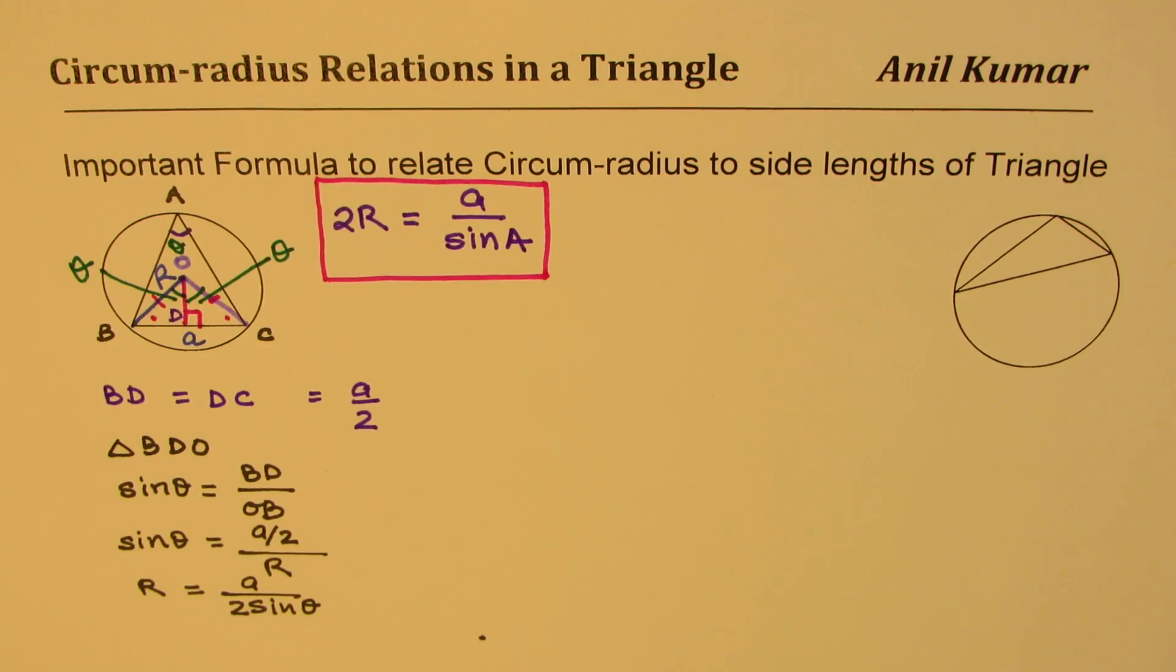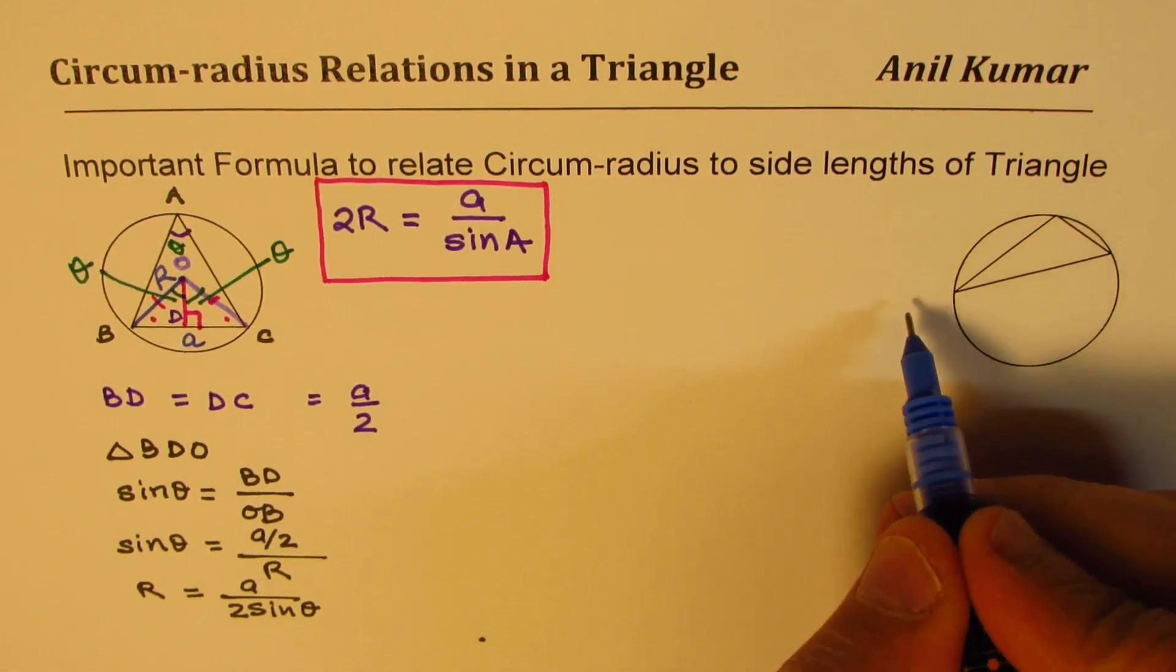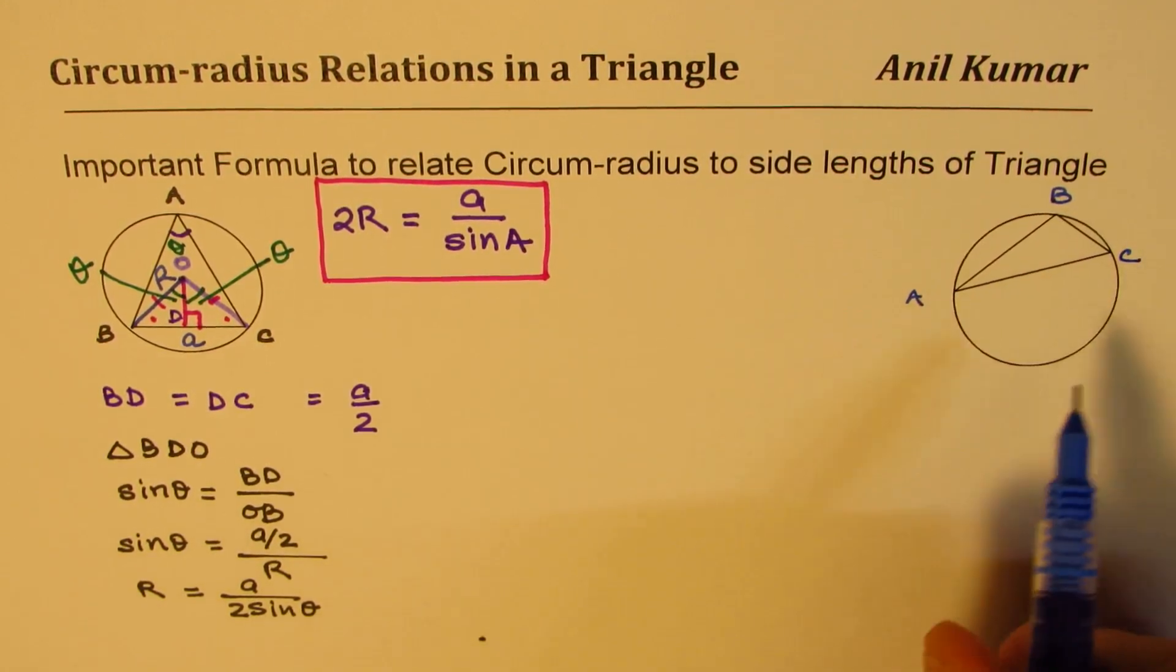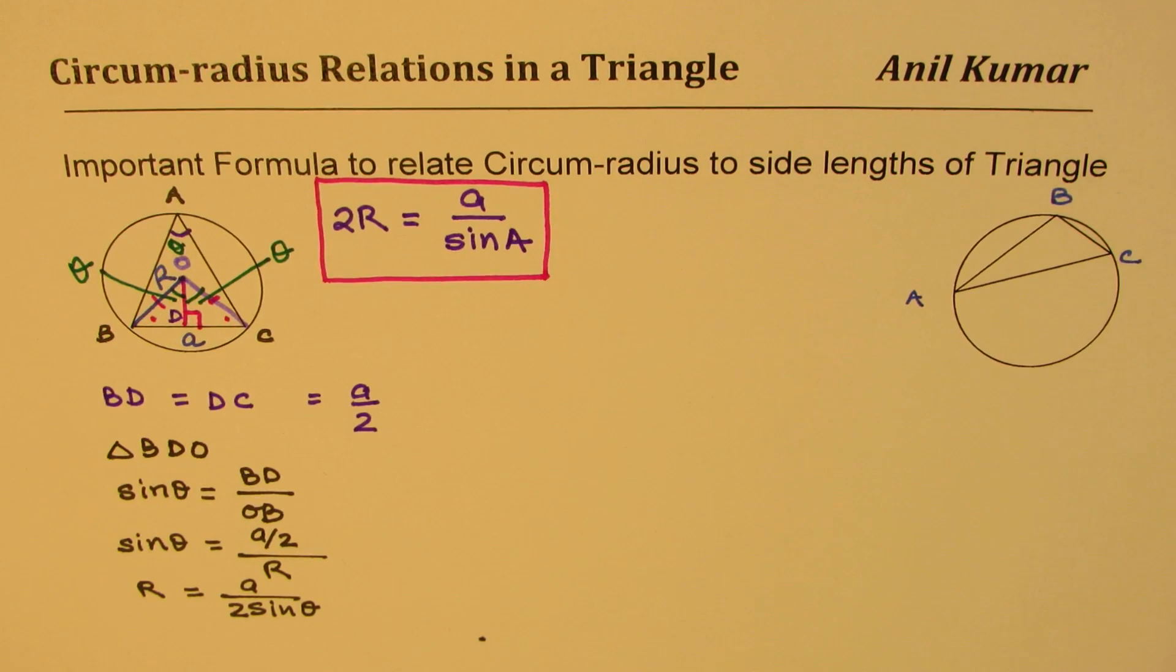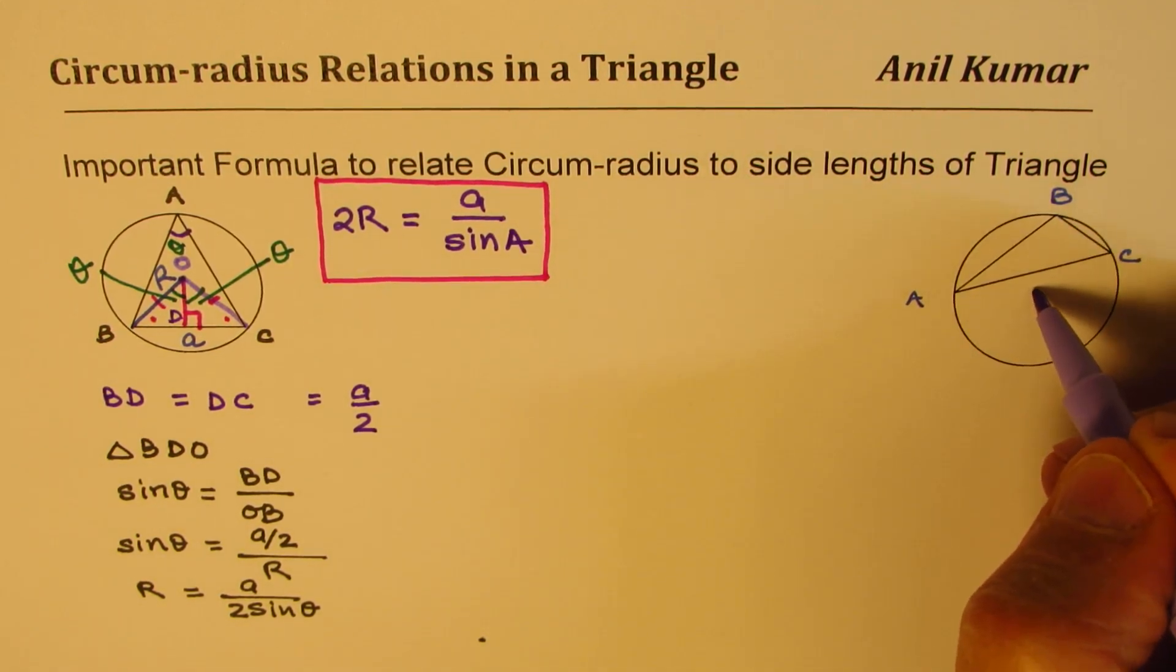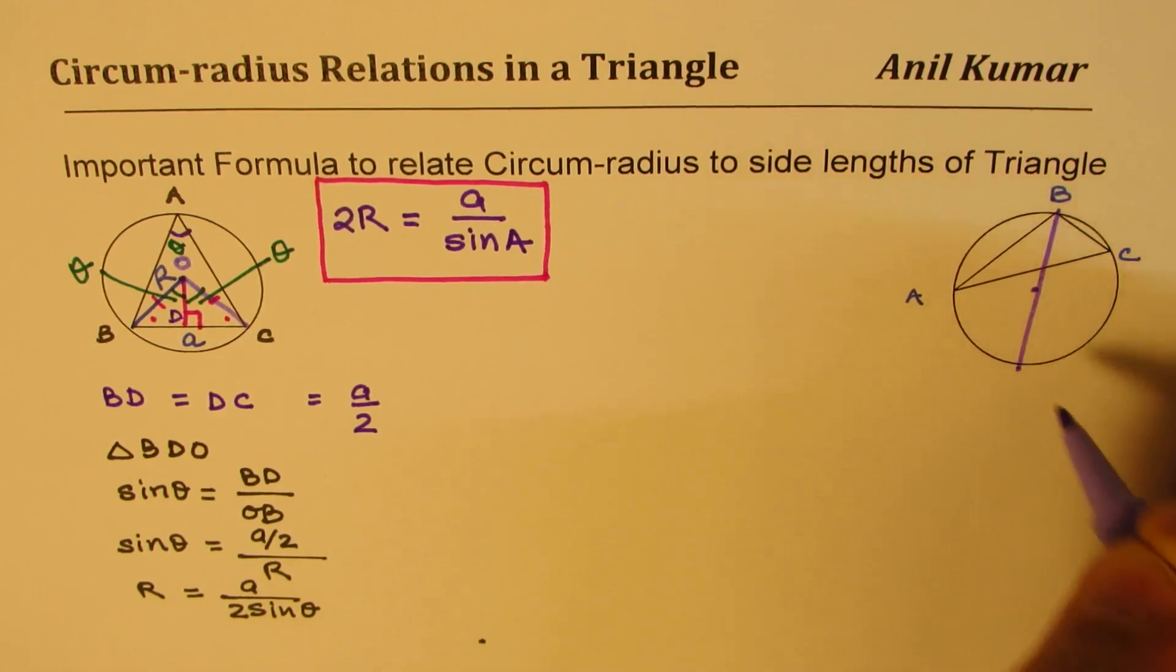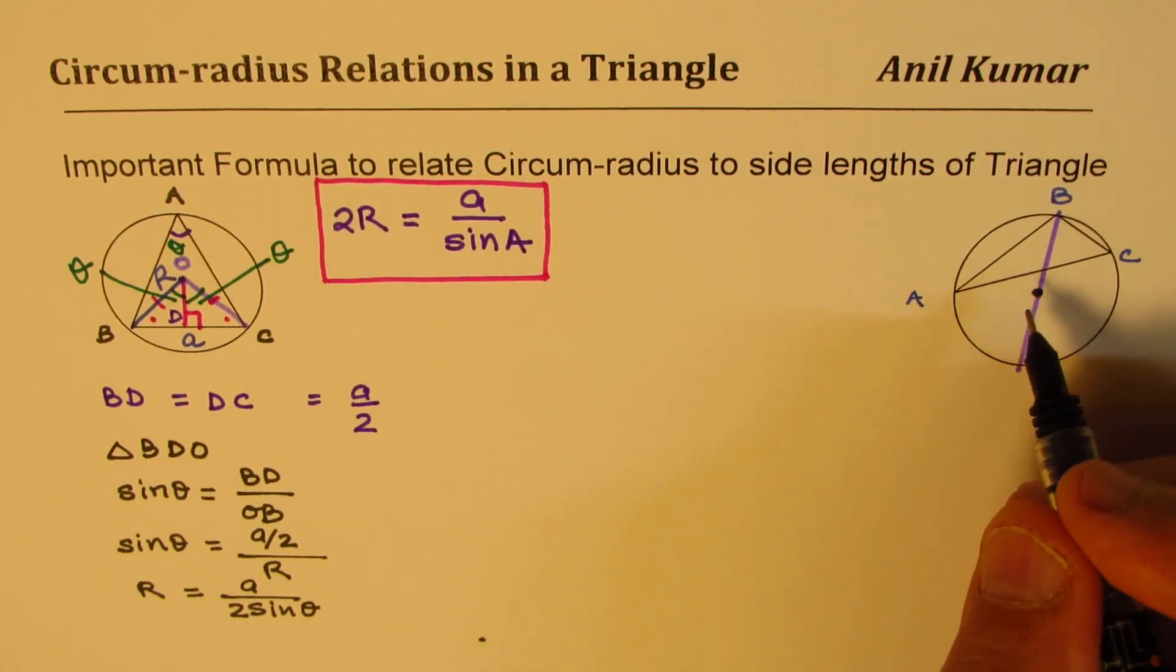Now let's derive another formula where we will relate the side lengths with the circum-radius. I have a triangle here, triangle ABC, which is circumscribed with this particular circle. Let's join point B with the center of the circle. Then that becomes the diameter. Let's call this point as point D.